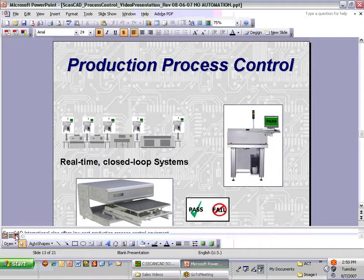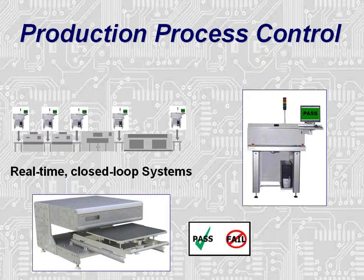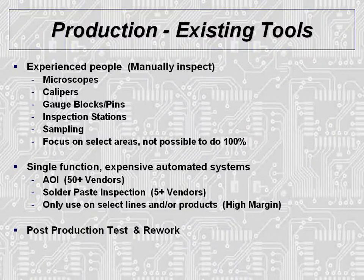ScanCAD International also offers low-cost production process control equipment. The most common form of inspection today in production involves the use of manual inspection by operators. Many of the same tools in use today for pre-production, such as microscopes, calipers, etc., are also used in production. It is typically not possible to perform a 100% inspection using these techniques, and you are dependent on the judgment of operators, which is typically not repeatable. Another option is an expensive, single-function AOI system — but it is not always possible to place these systems in every line due to high cost. Another option is to not inspect at all and just test at the end of the line, which can result in expensive rework and typically does not catch all the problems.